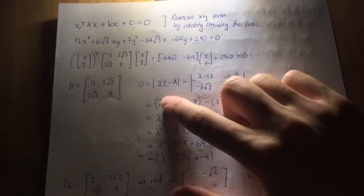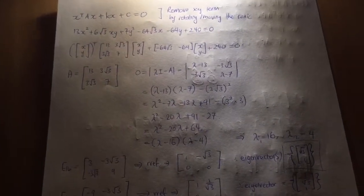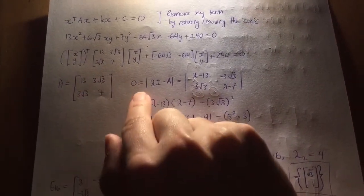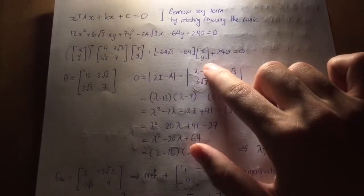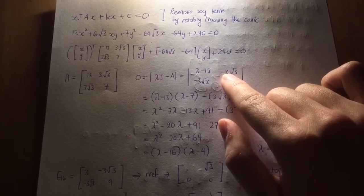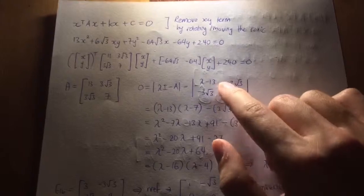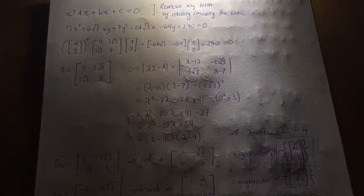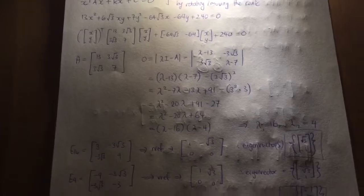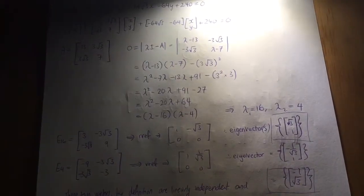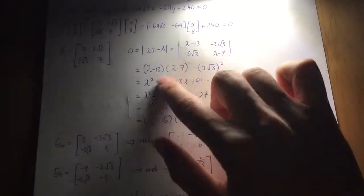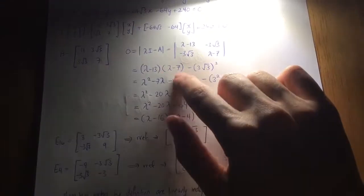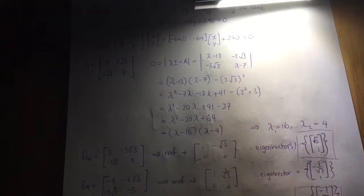The way we get A is we take the coefficient of x squared, that forms that element (1,1). We then halve this 6√3, so we get 3√3, and that forms those two positions along the diagonal. So half of the coefficient of xy goes in there, and then the coefficient of y squared, which is just 7, goes in there. So now what we want to do is solve for the eigenvalues associated with that matrix A.